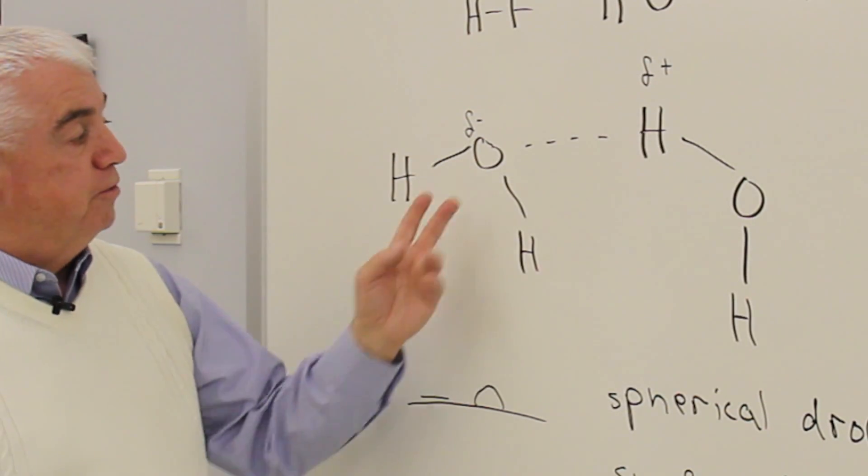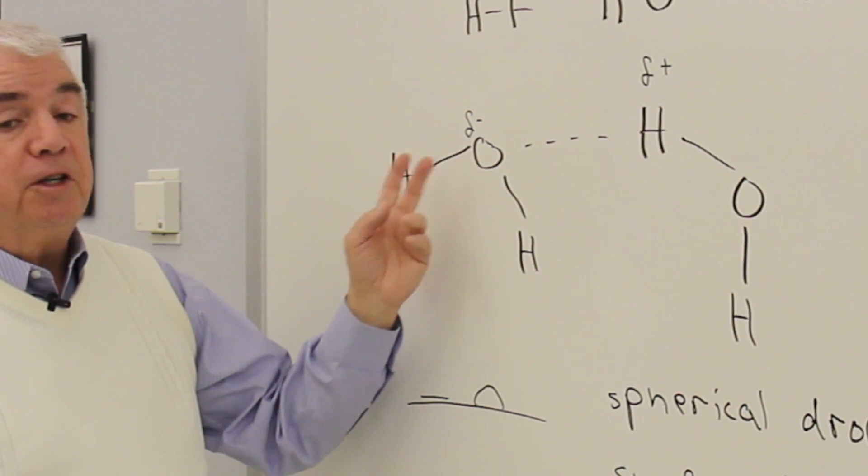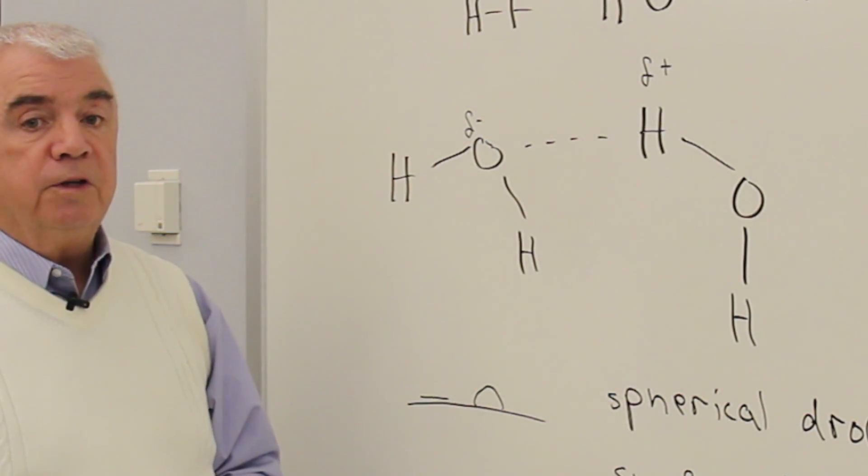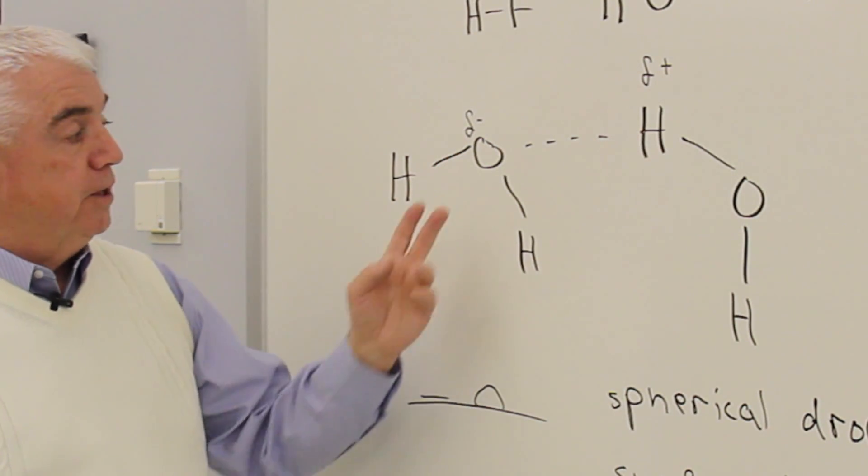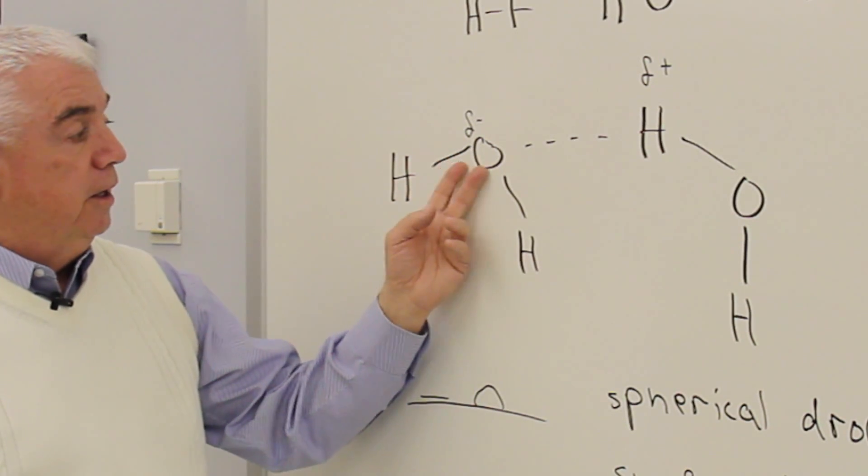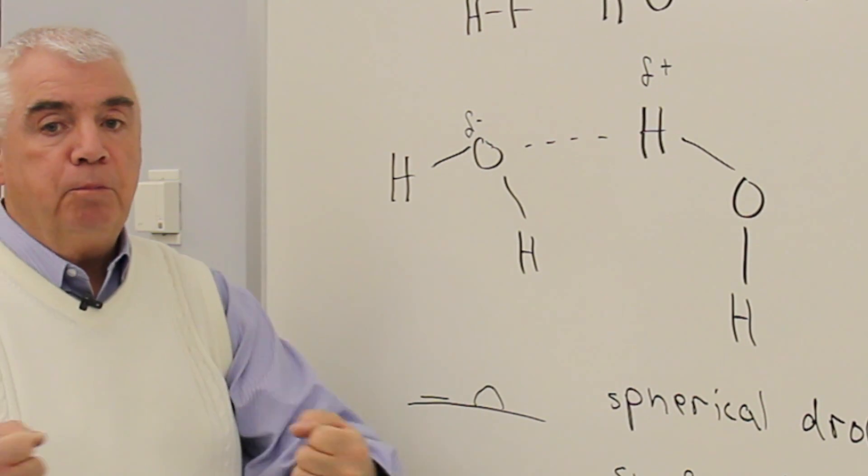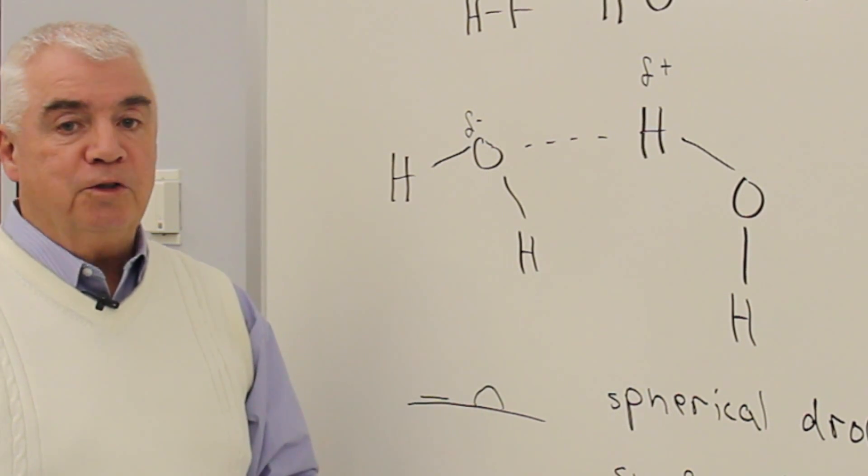Oxygen is very electronegative. That is to say, it's pretty greedy when it comes to shared electrons between itself and a hydrogen atom. It has a much larger size nucleus with a much greater charge, and so it pulls those shared electrons toward it.